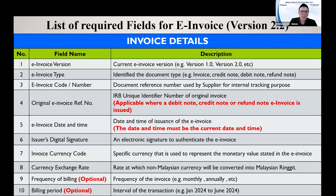The e-invoice date and time will be stated when IRBM validates the invoice, including the time. There is also a digital signature, so you no longer need to print out and get a physical signature. The invoice currency code indicates which currency you are using. The currency exchange rate and frequency of billing — whether monthly or annual basis — are optional fields. Billing period interval, such as monthly or quarterly with specific months, is also optional.